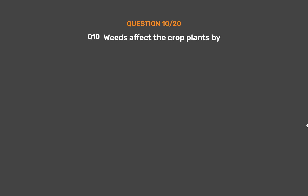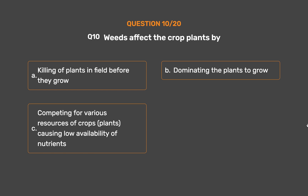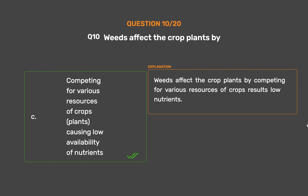Question No. 10. Weeds affect the crop plants by — Option A: Killing off plants in the field before they grow. Option B: Dominating the plants to grow. Option C: Competing for various resources of crops, causing low availability of nutrients. Option D: All of the above. The correct answer is Option C: Competing for various resources of crops, resulting in low nutrients.